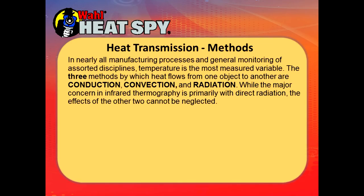In nearly all manufacturing processes and general monitoring disciplines, temperature is the most measured variable. There are three methods by which heat flows from one object to another: conduction, which is direct molecular contact — heat transfer by touching; convection, which is through air flow; and radiation, the greatest example of which is the sun. The major concern in infrared thermography is primarily with direct radiation, but the effects of the other two will be seen and cannot be neglected.